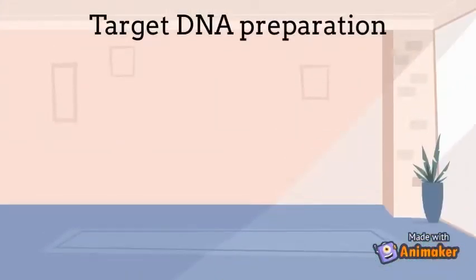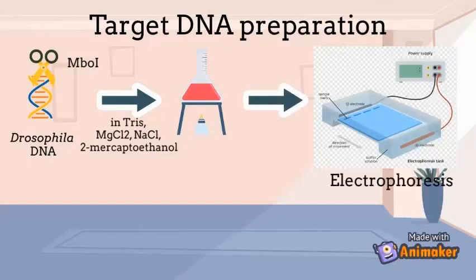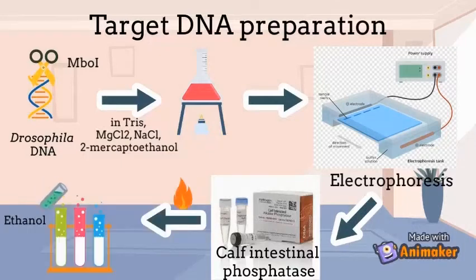For preparation of target DNA, Drosophila DNA was digested with MboI in Tris, MgCl2, NaCl, and beta-mercaptoethanol for 10 minutes at room temperature with gentle mixing, and the reaction was stopped by heating. The extent of reaction was checked with electrophoresis. DNA was dephosphorylated with calf intestinal phosphatase and then inactivated with heating. Nucleic acid was precipitated with ethanol and Tris-EDTA.